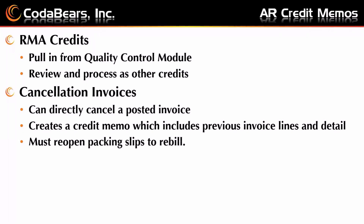A best kept secret is a cancellation invoice. A cancellation invoice is a credit memo — it directly cancels a posted invoice. It will create a credit memo which includes all the previous invoice lines in detail, which will save you a lot of keying effort. However, you must reopen the packing slips in order to re-bill this particular invoice, so be aware of that as we go through.